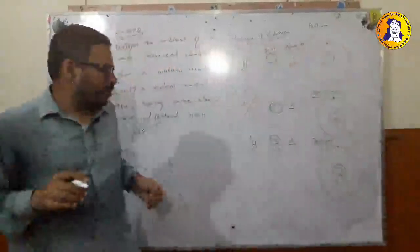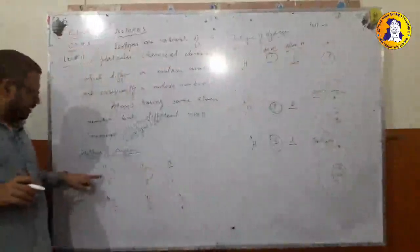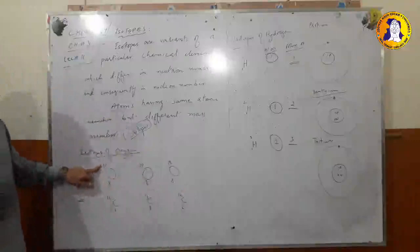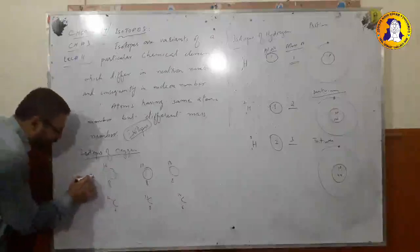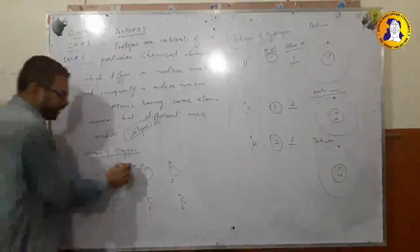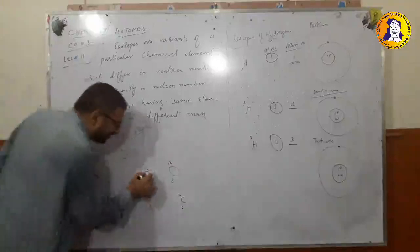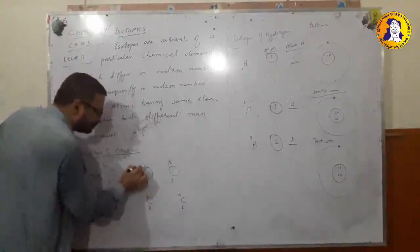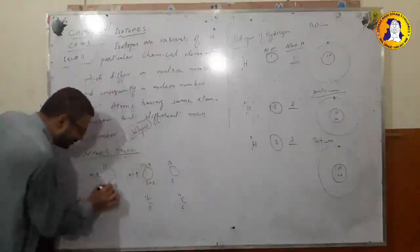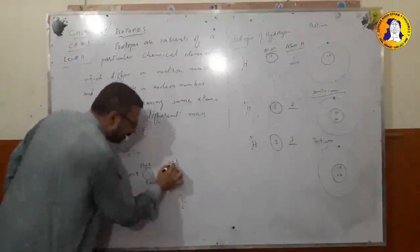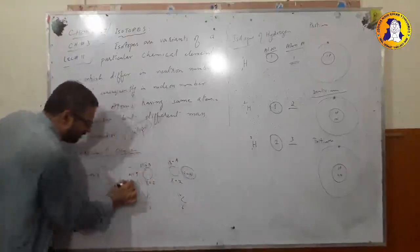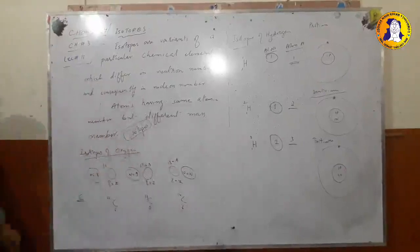Oxygen is also found in three different isotopic forms. In all forms oxygen has atomic number eight. In the first form it has mass number sixteen, meaning the number of neutrons N equals sixteen minus eight, which is eight. In another form it has mass number seventeen, meaning it has nine neutrons. Using the formula A minus Z equals N, we can see that the number of neutrons in all isotopic forms of oxygen is different.